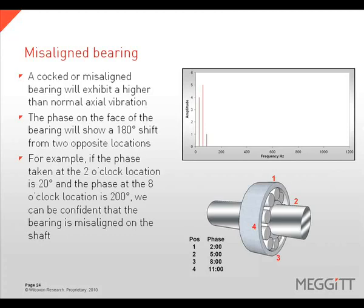A bearing that is cocked on the shaft will exhibit higher than normal levels of vibration in the axial direction at 1x and more significantly at 2x rotational speed. The best method to distinguish a cocked bearing is to take axial phase readings around the face of the bearing. If the bearing is straight on the shaft, the phase will remain steady within plus or minus 30 degrees. In the case of a cocked bearing, there will be a 180 degree phase shift from one position to the opposite position — for example, 20 degrees at the 2 o'clock position and 200 degrees at the 8 o'clock position.